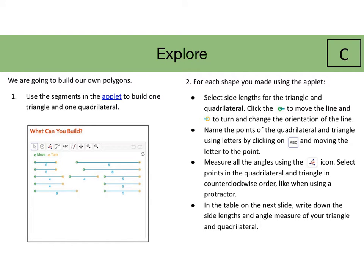The Explore is going to have students building their own polygons. Students are going to use the segments in the applet to build one triangle and one quadrilateral. It is important to model this with the students because even as an adult working with the applet, it can be difficult. If you try moving it from anywhere that's not the green circle for move, it will move the whole applet page. Additionally, if you try turning it from anywhere besides the turn point, again, it will move the whole applet page rather than get the desired effect. So it's important to show students that if they want to move the specific line that they click from the green circle. And if they want to change the angle of it, a.k.a. turn, that they have to click from the yellow circle.